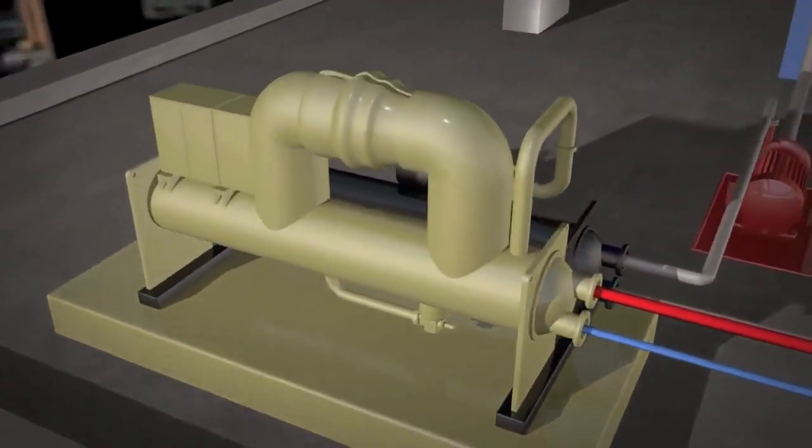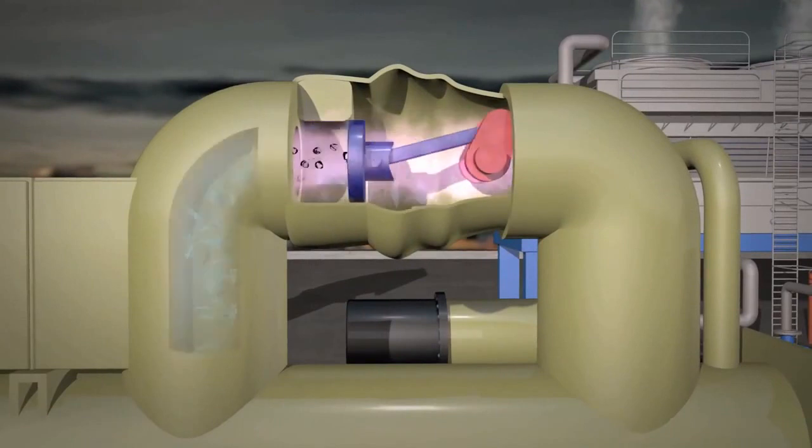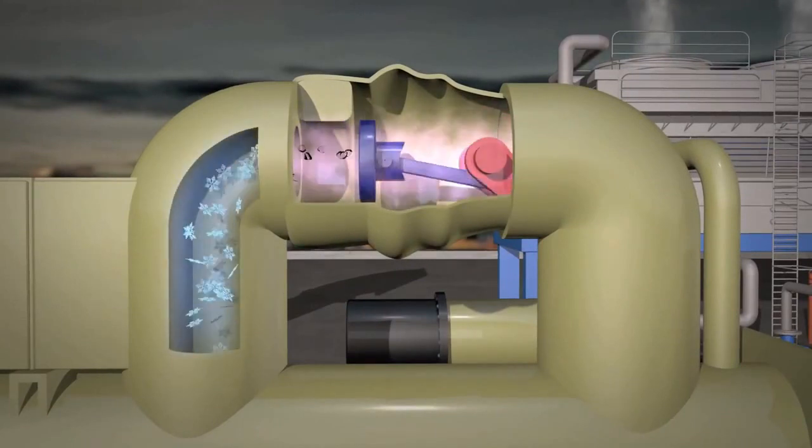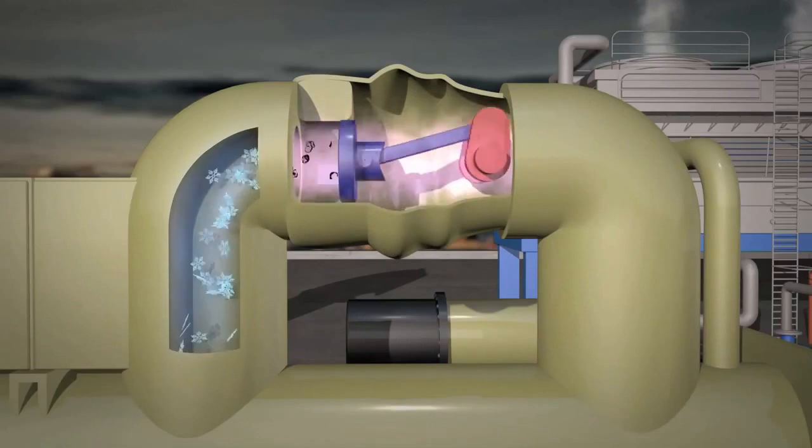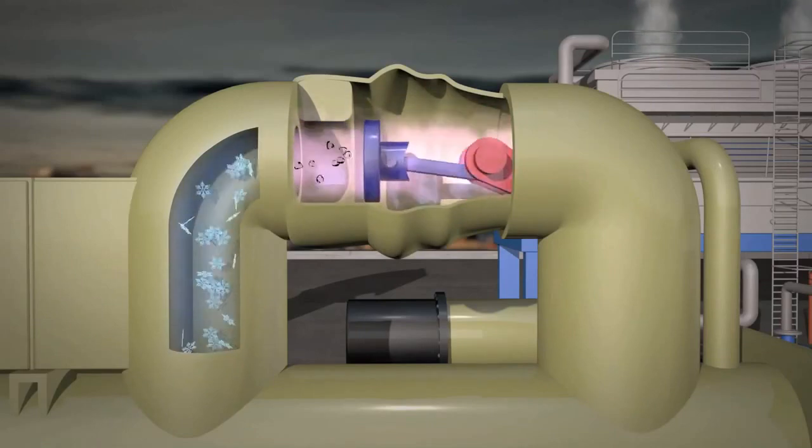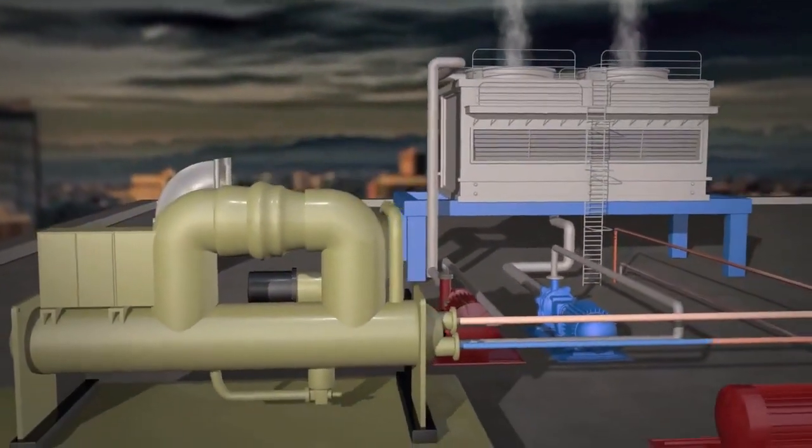The chiller has a compressor that initially squeezes gas, turning it into a liquid, that then passes through an expansion valve, returning it back to gas and making it cold. The cold refrigerant gas absorbs the heat being carried in the water coming from the cooling coil. This chilled water is then returned to the coil.